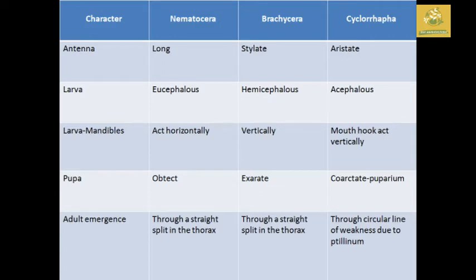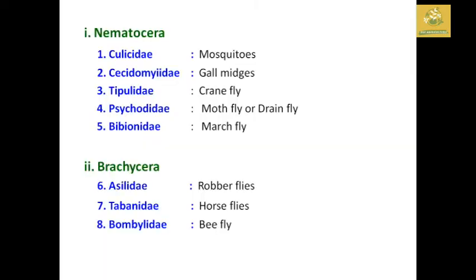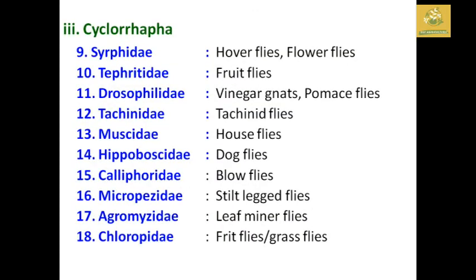I have given the differences in characters between these three suborders of the order Diptera, so you can remember them. Lecture notes are given in the description. The suborders contain different families. Nematocera contains five families: Culicidae, Cecidomyiidae, Tipulidae, Psychodidae, and Bibionidae. Brachycera includes Asilidae, Tabanidae, and Bombyliidae.